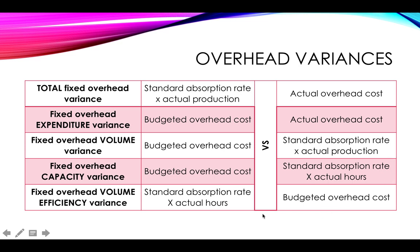Finally, the fixed overhead volume efficiency variance looks at the standard absorption rate times actual hours compared to the budgeted overhead cost. All of these give slightly different meanings, helping you understand in more detail why the budget differs from the actual.